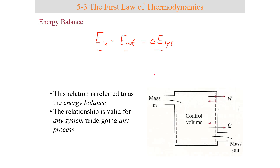Energy in is all energy in by mass, by heat, and by work. Energy out is all energy out by mass, by heat, and by work — and that equals the change in energy of the system.